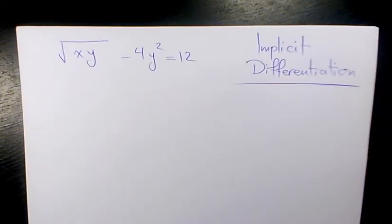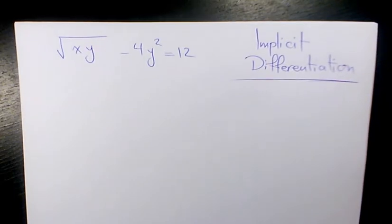What's up guys, this is Massey. Welcome to another video. In this video I want to show you how to find the derivative of square root of xy minus 4y squared equals 12. I need to use implicit differentiation.